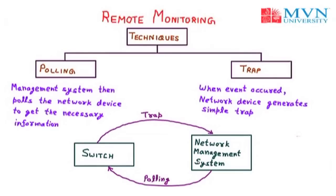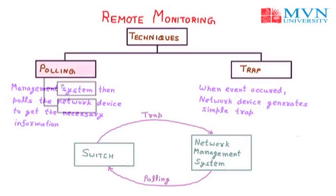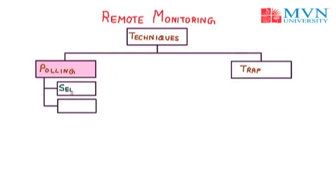Under polling we have two main functions: the first one is select and the second one is poll. Polling works with a topology in which one system or device is designated as the primary station and the other device as the secondary station. The primary device controls the link and the secondary device follows its instructions. The primary device determines which device is allowed to use the channel at any given time.